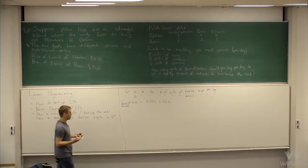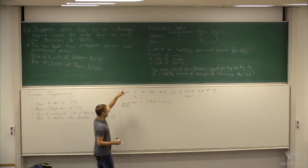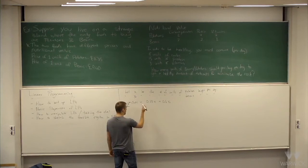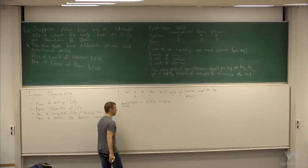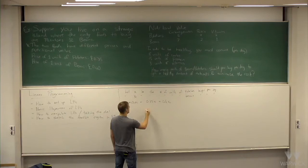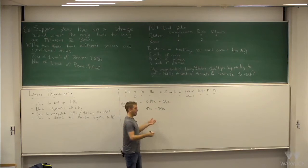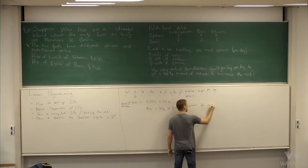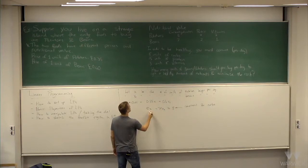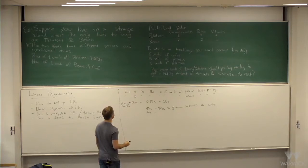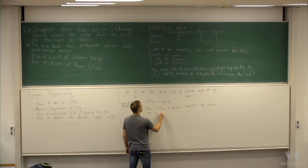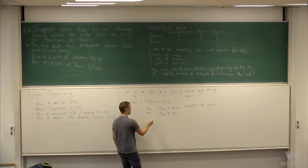We have some restrictions: we need to get enough carbohydrates. From each unit of potatoes you get 5 units of carbs, from each unit of beans you get 7 units. So 5X1 + 7X2 must be at least 8. For protein: 4X1 + 2X2 must be at least 15. For vitamins: 2X1 + X2 must be at least 3.